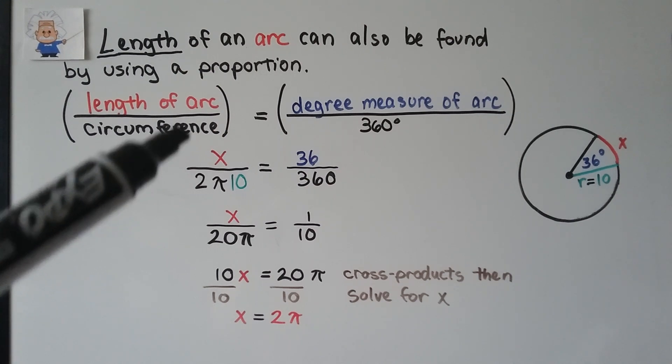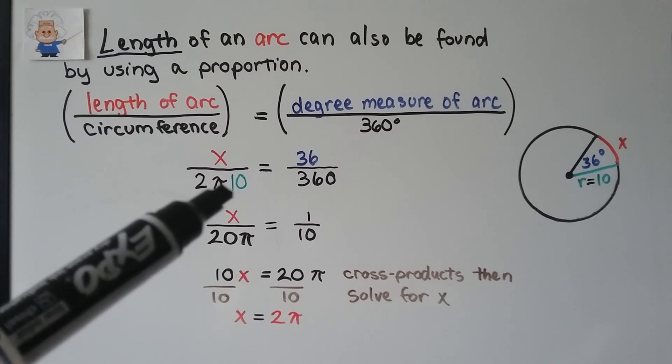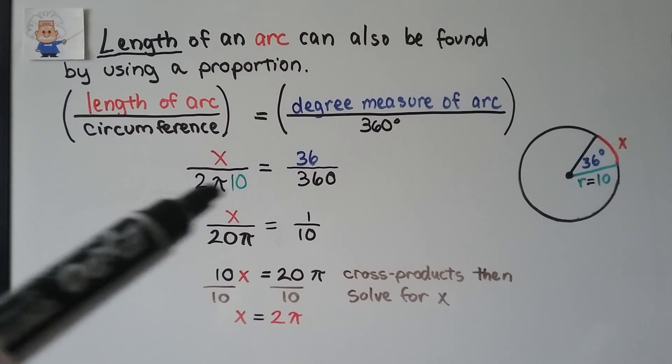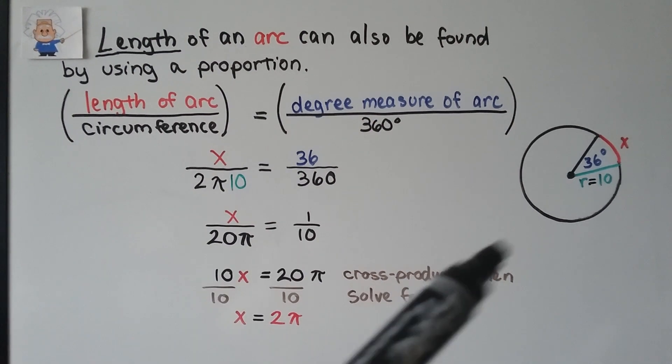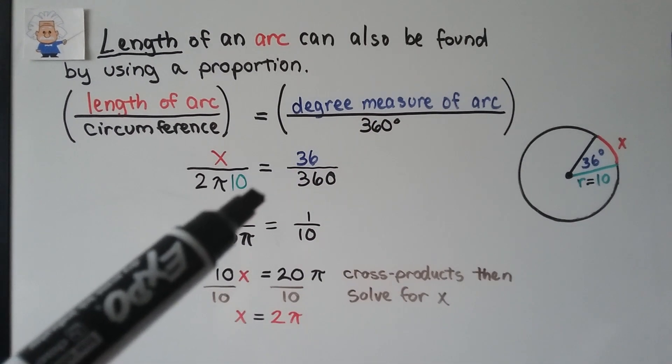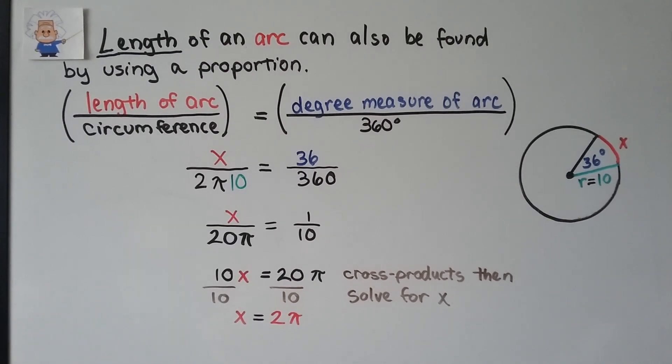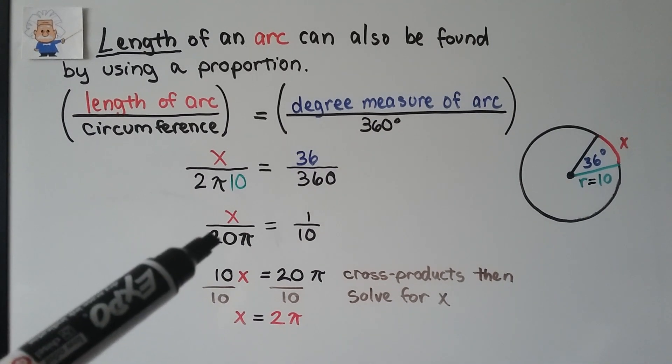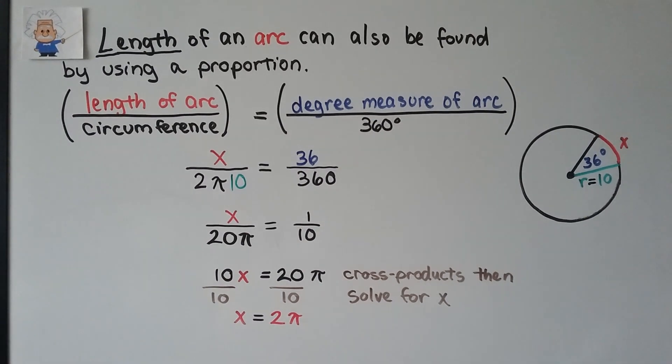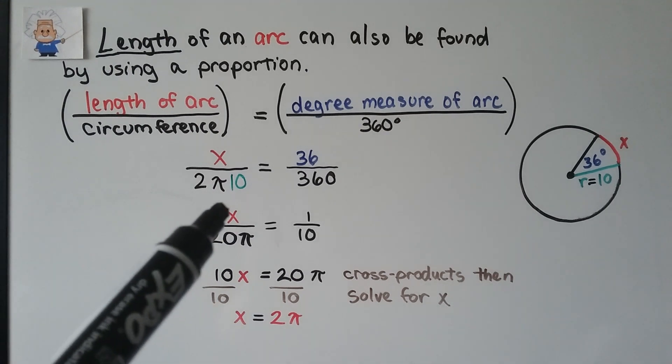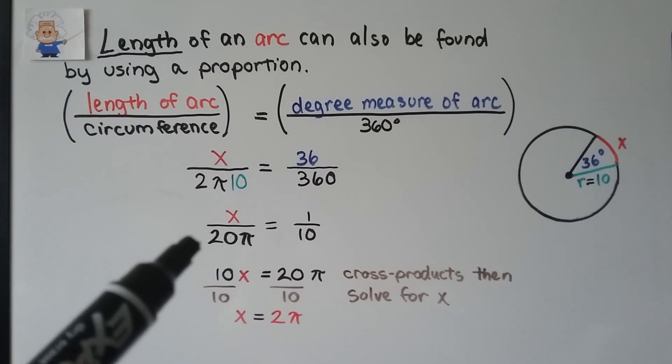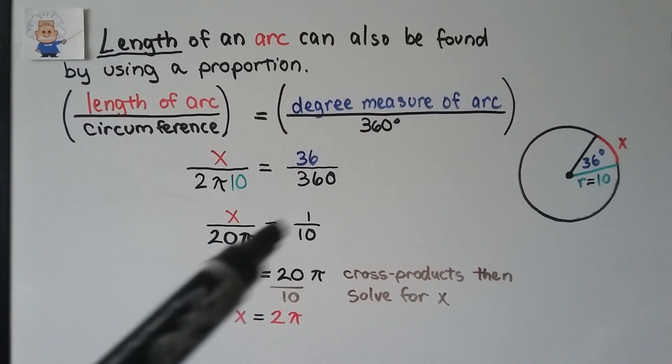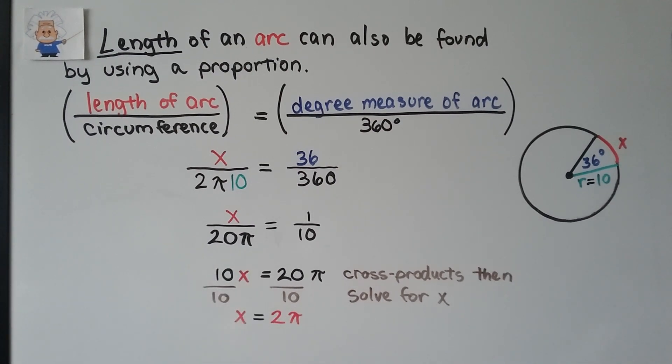We would have X divided by 2 pi 10, because that's the circumference, right? 2 pi R, we know the radius is 10. It's going to be equal to the quotient of 36 and 360, which is 1 tenth. 2 times 10, that would give us 20 pi. Now we can just use cross products. We would get 10X is equal to 20 pi, and we just solve for X. We divide both sides by the 10. We get 1X is equal to 2 pi, the same as before.